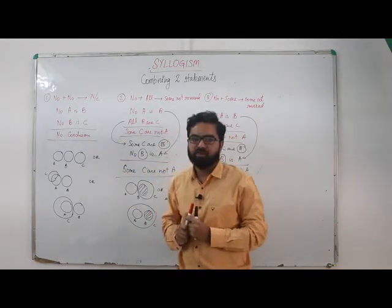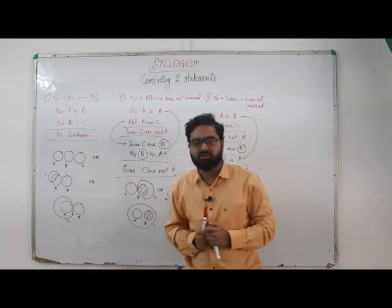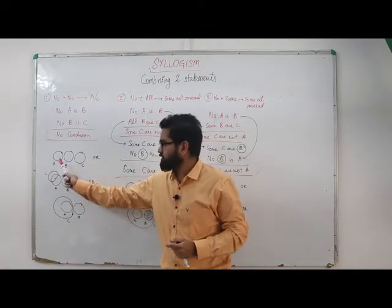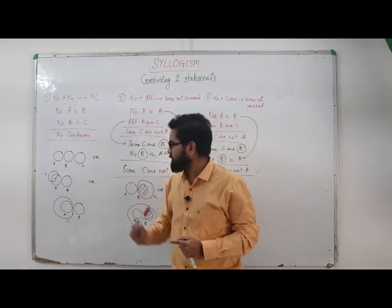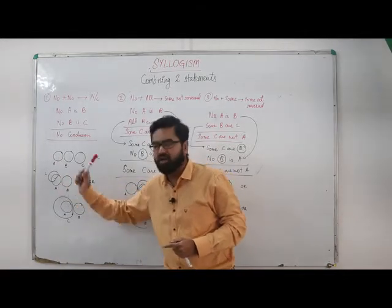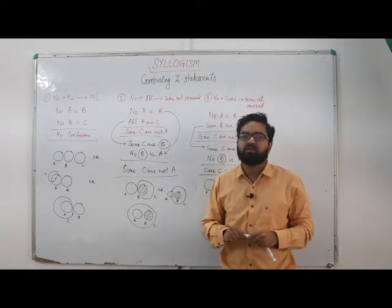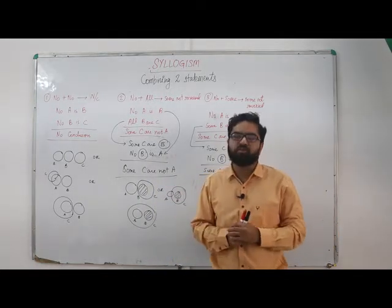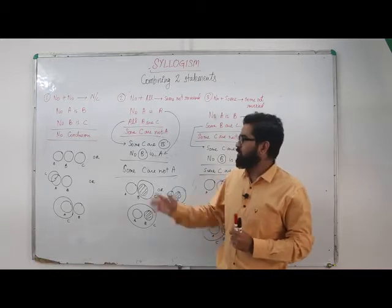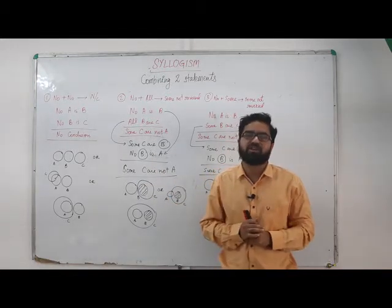This can be written in three ways using Venn diagram. The conclusion, if you see from A to C, is no A is C. Here some A are C, and last one all A are C. So as we have seen in two previous cases, whenever all the possibilities are there, we cannot draw logically any conclusion.